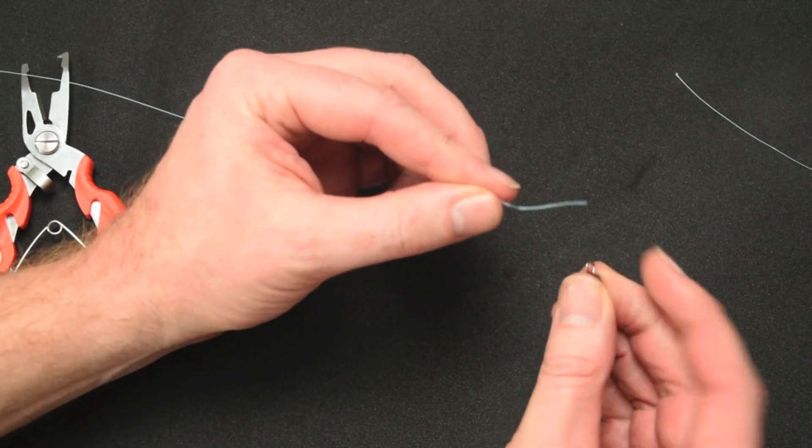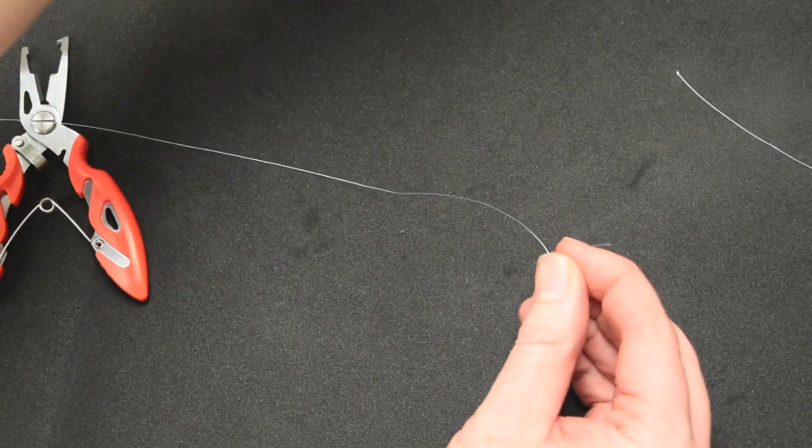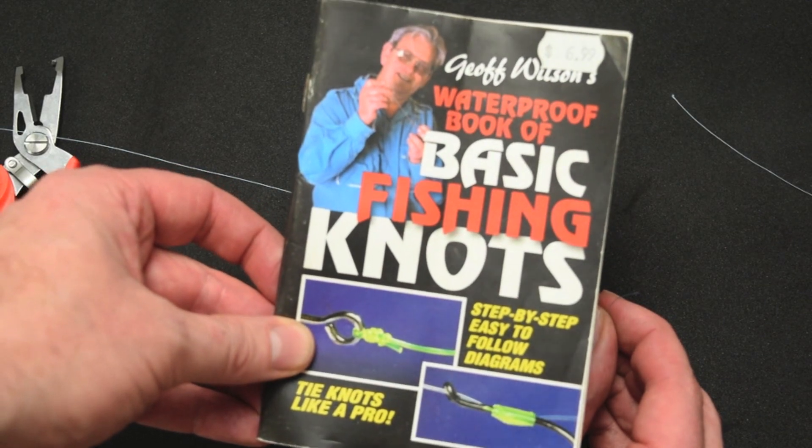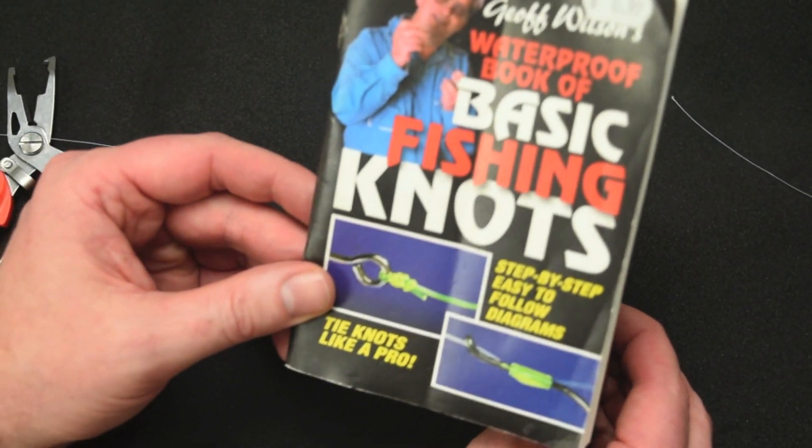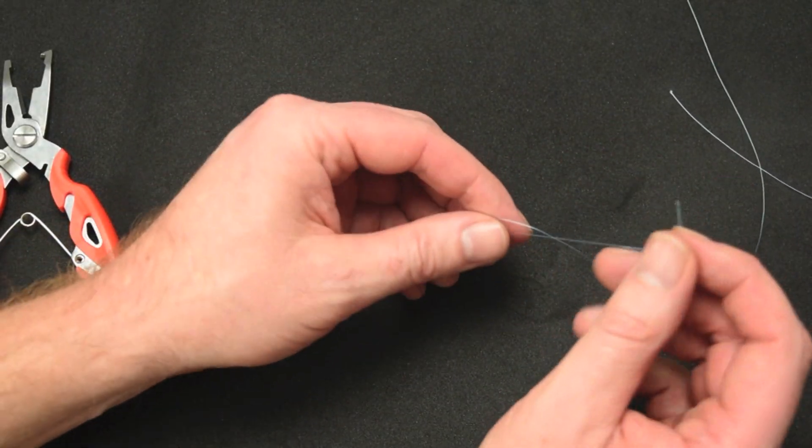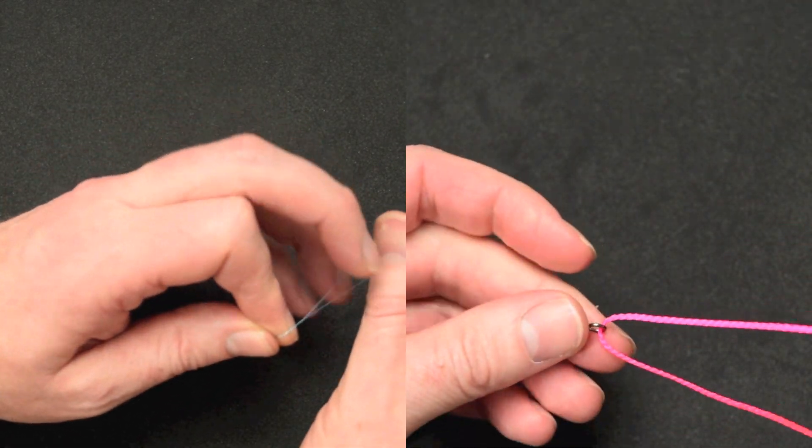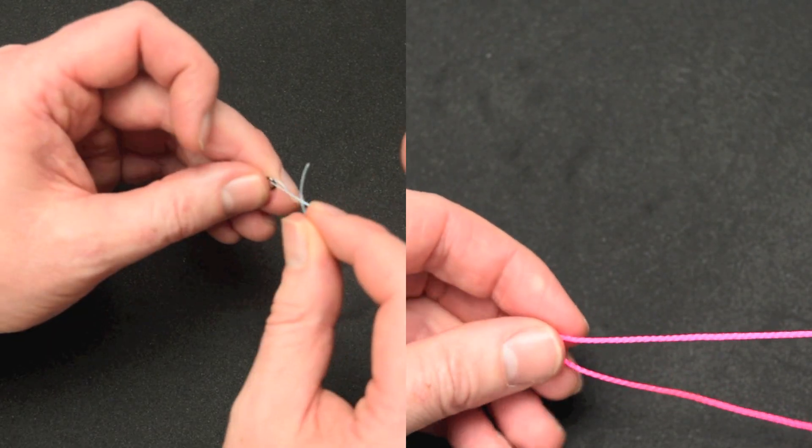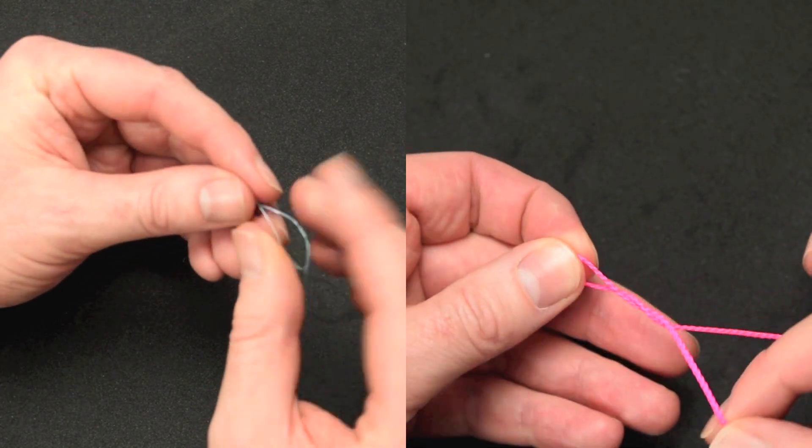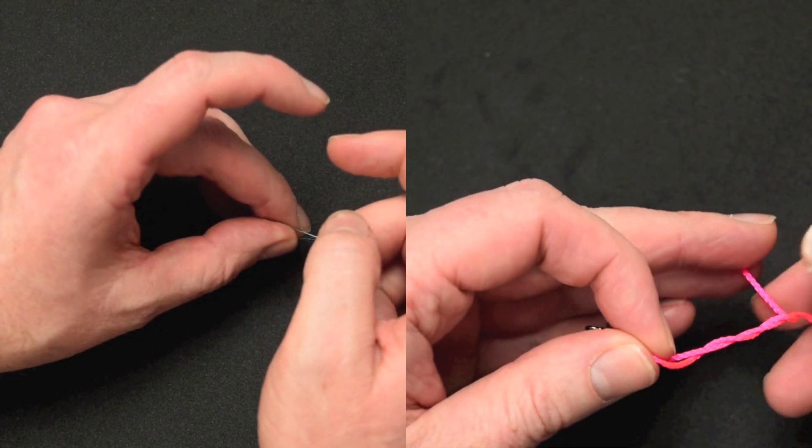This is normally used for our main line however just for the purpose of this we're going to use this because it's a little bit easier to see. So you need about 50 centimeters of leader. First thing you want to do is tie your swivel. So we're just going to use a blood knot. If you need a hand with knots I suggest that you have a look at this book here. This is Jeff Wilson's waterproof book basic fishing knots.